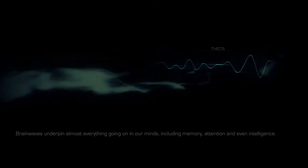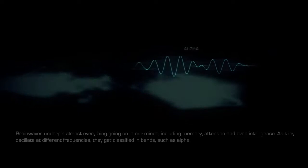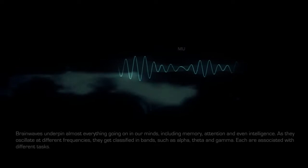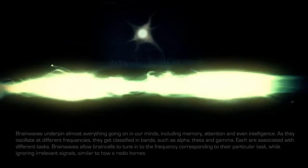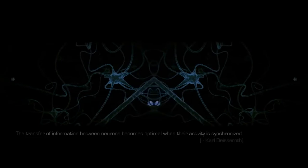Brain waves underpin almost everything going on in our minds, including memory, attention, and even intelligence. As they oscillate at different frequencies, they get classified in bands such as alpha, theta, and gamma. Each are associated with different tasks. Brain waves allow brain cells to tune into the frequency corresponding to their particular task, while ignoring irrelevant signals, similar to how a radio homes in on different waves to pick up radio stations. The transfer of information between neurons becomes optimal when their activity is synchronized.